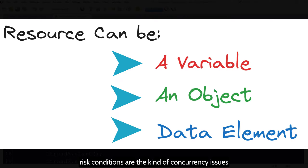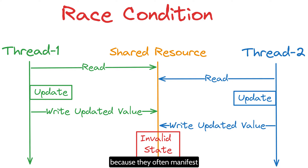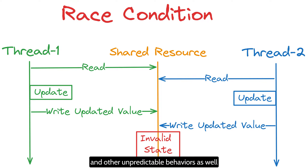Race conditions are the kind of concurrency issues that can be very tricky to debug because they often manifest only under some specific timing conditions. They can lead to program crashes, incorrect results, and other unpredictable behaviors as well.